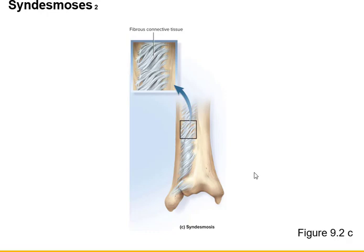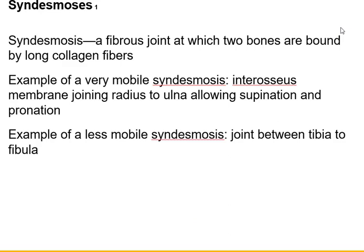A syndesmosis is a fibrous joint where two bones are bound together by long collagen fibers. You find this in the ulna and radius, and in the tibia and fibula. This causes these bones to act as one unit — you're not moving one bone independently of the other. Since they're tied together with fibrous connective tissue, they act as one bone. Fibrous joints are usually considered immovable, but the ulna and radius do have a very limited ability to move through the syndesmosis.